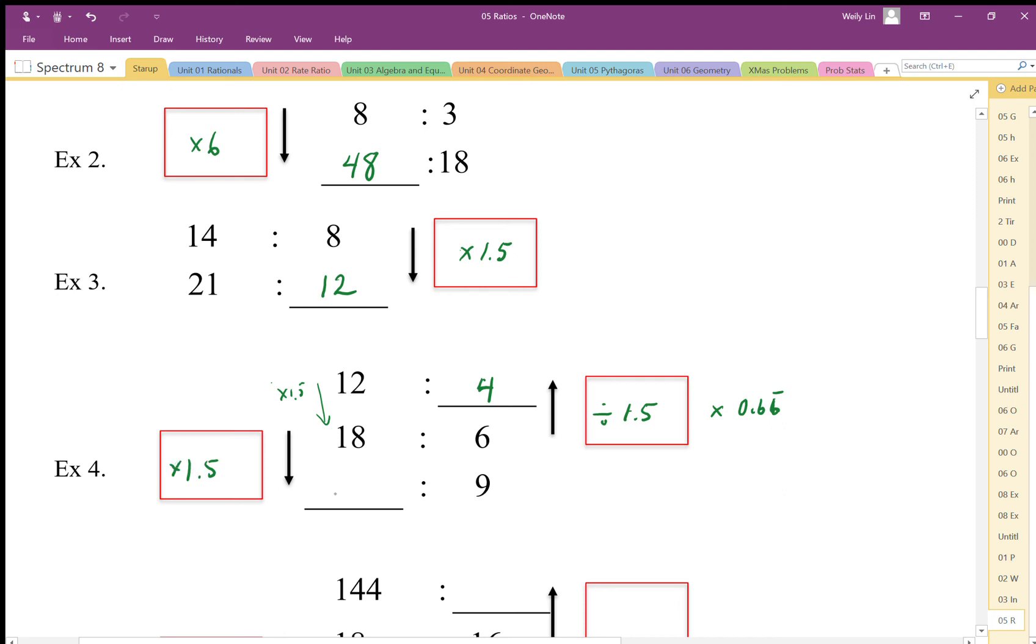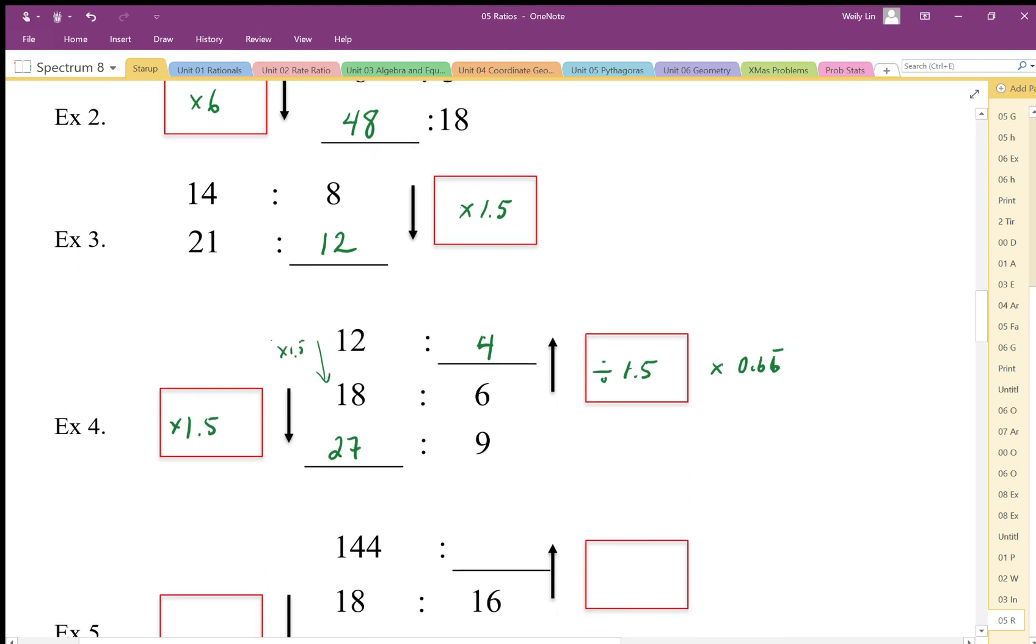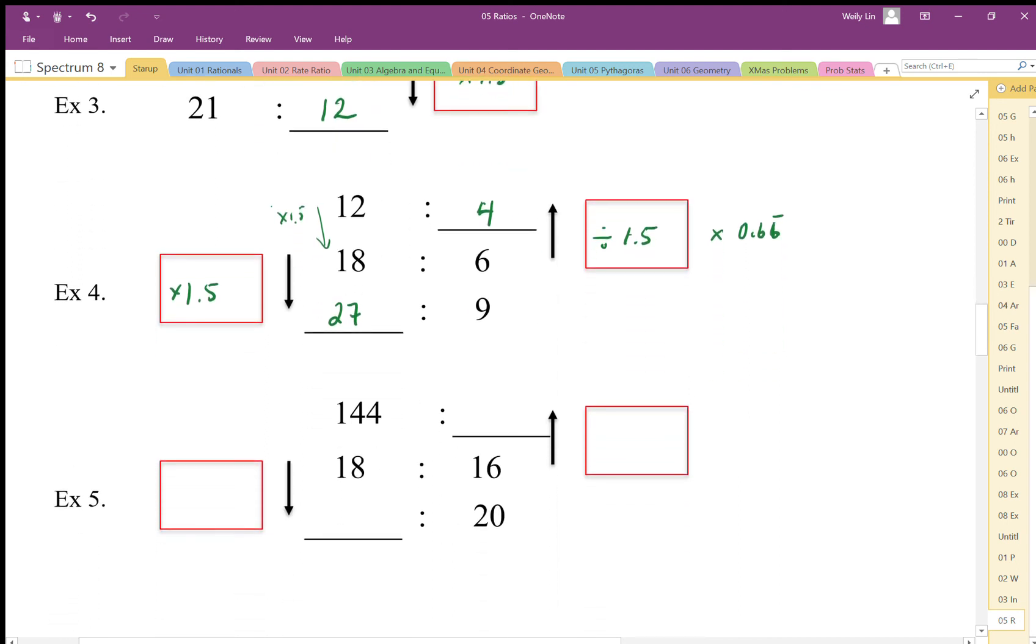Same thing here. I want to divide 144 divided by 18. That looks like it is—looks like 8. So we have times 8 multiplier. 16 times 8, that works out to be 126. So 144 to 126 is the same as 18 to 16.